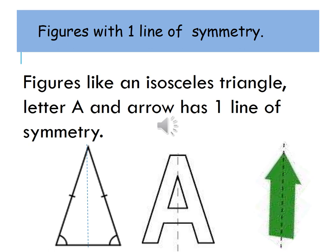Figures with one line of symmetry: figures like an isosceles triangle, letter A, and arrow have one line of symmetry.